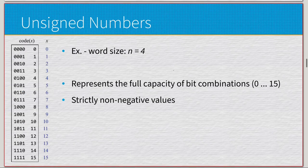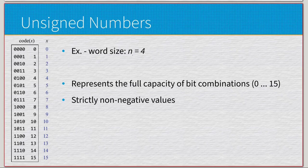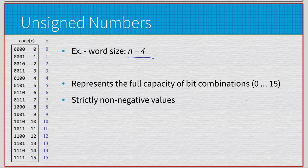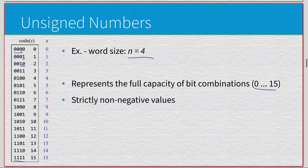What we have here is the actual representation of unsigned data. Our word size is still n equals four, so we represent the full capacity of bit combinations because we don't have to worry about polarity or the sign. The data is going to be exactly what it shows. That means zero to 15: from four zeros through four ones. Each time we just increment by one until we reach 15. The data is exactly what it says — very simple, no weird things happening just yet.